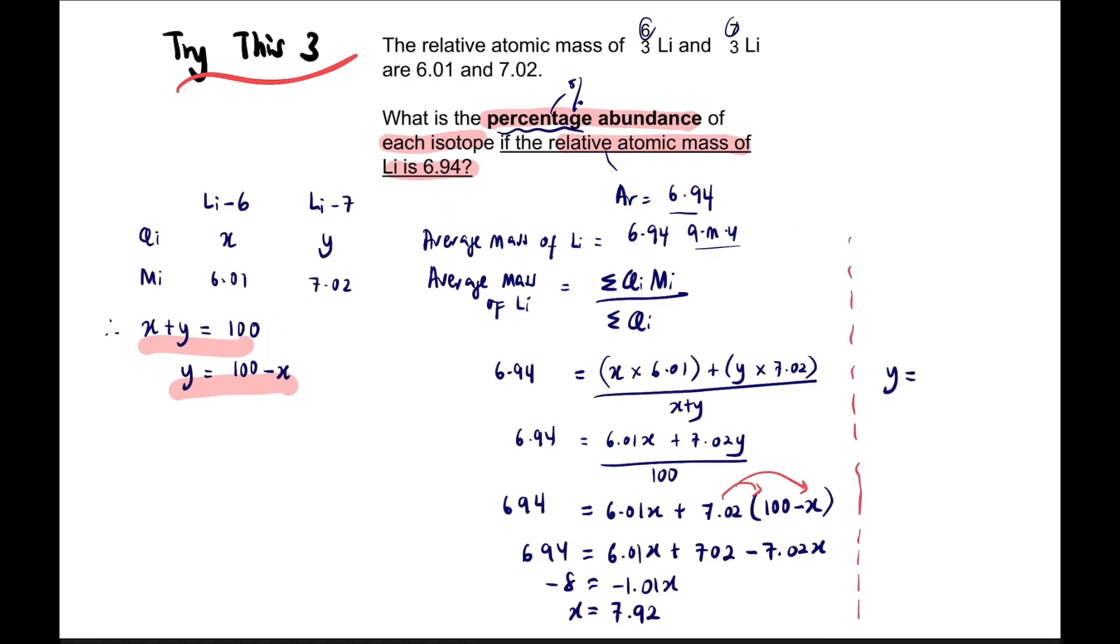Y is 100 minus X, which is 100 minus 7.92, giving 92.08. In conclusion, the percentage abundance for Li-6 is 7.92%, while the percentage abundance for Li-7 is 92.08%.